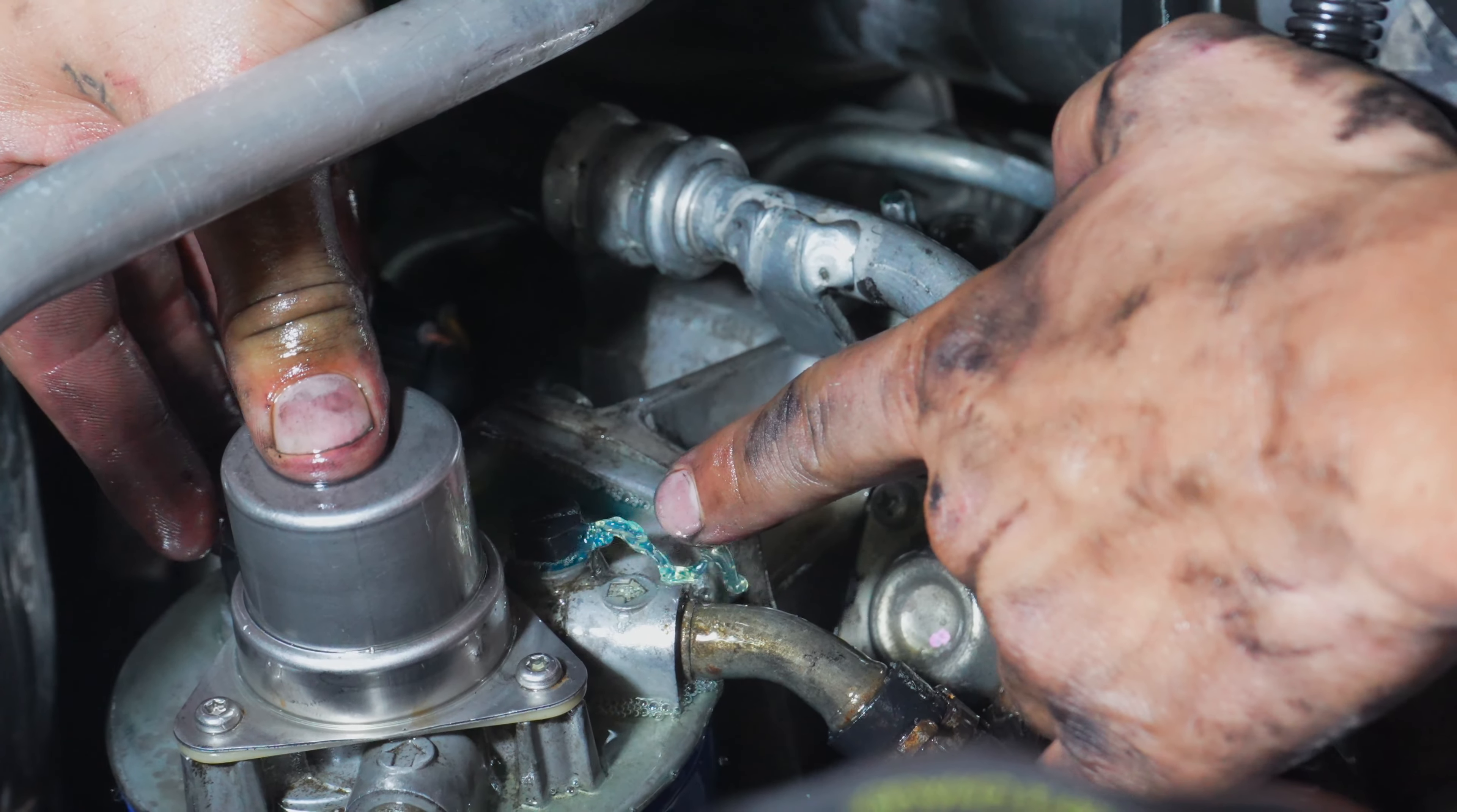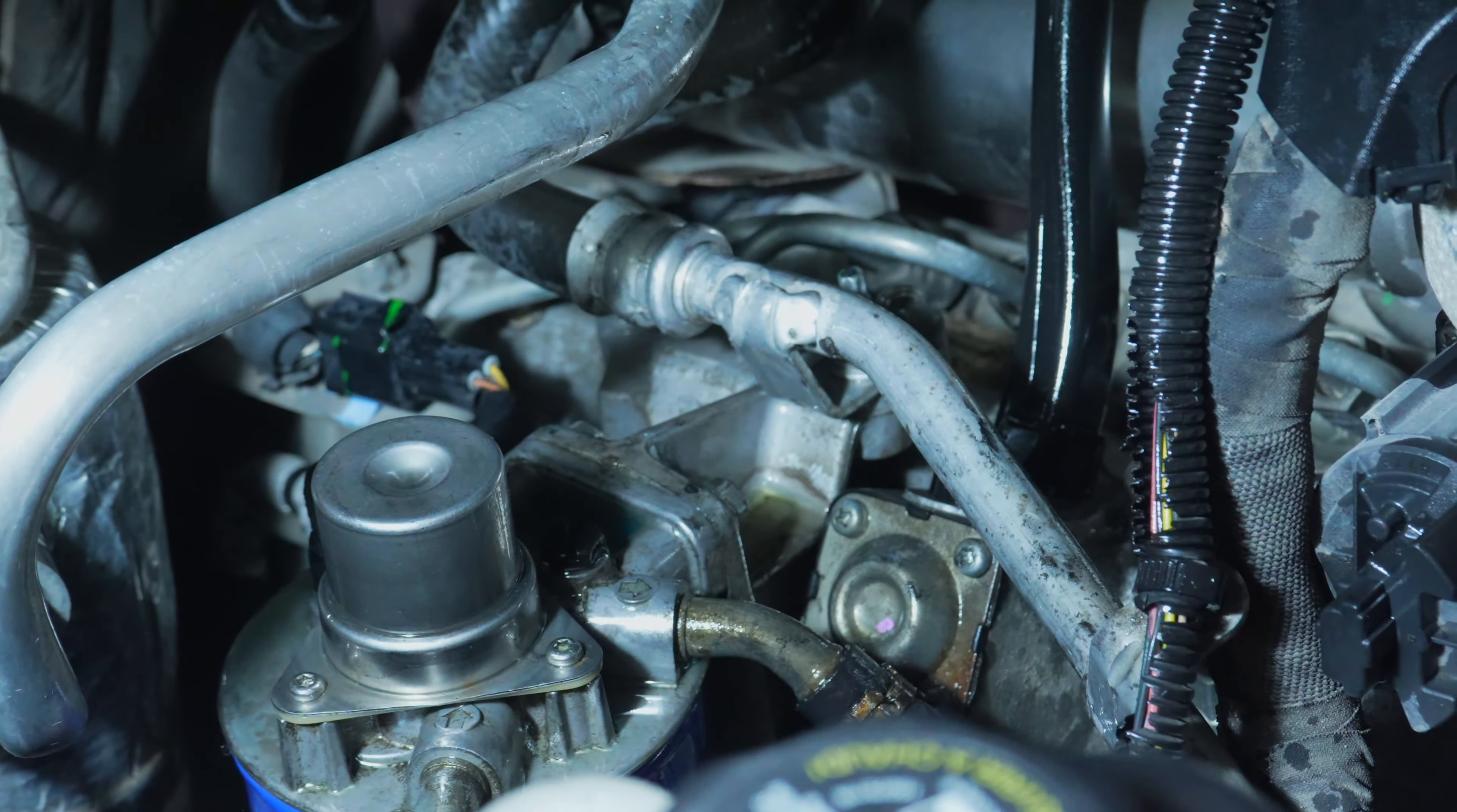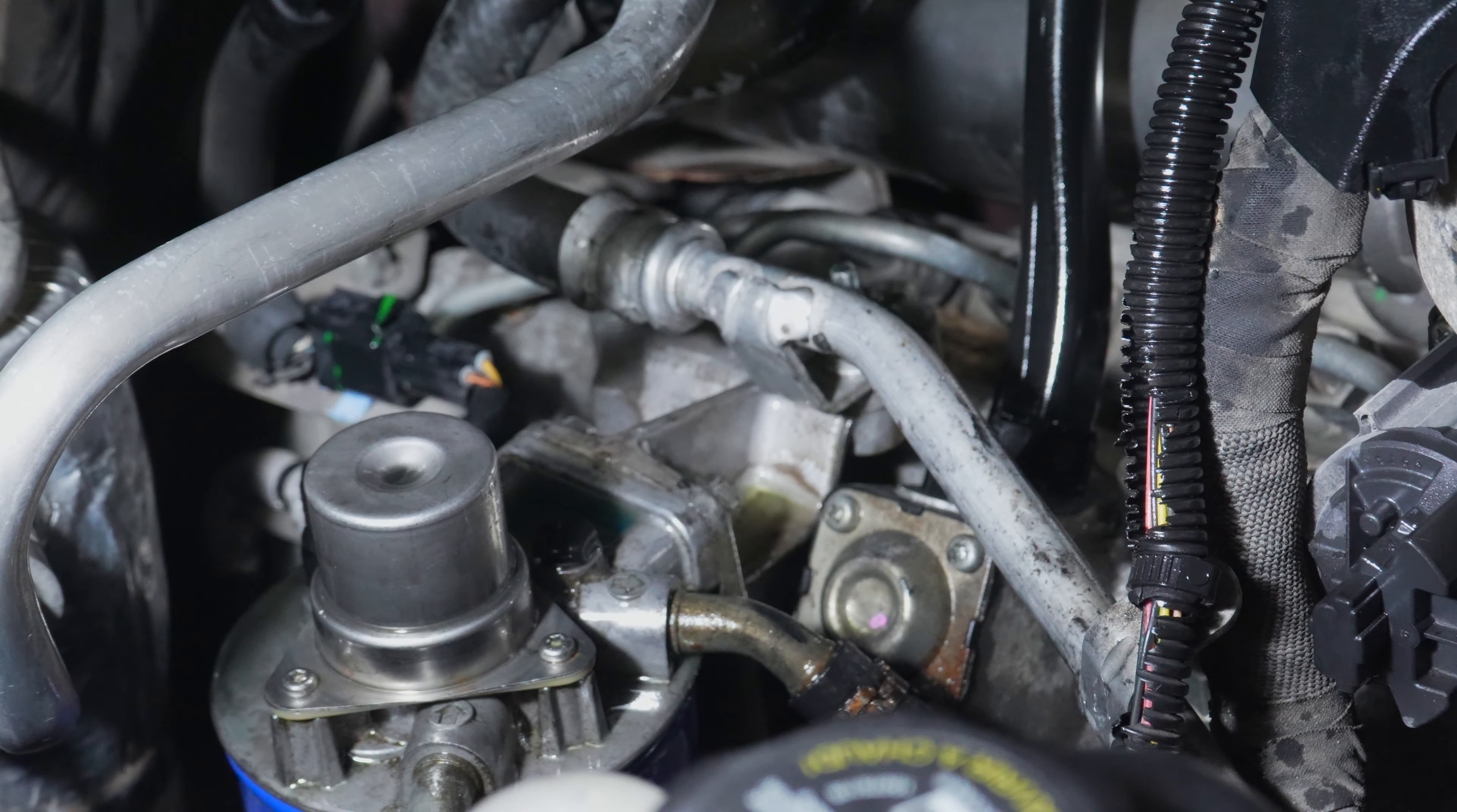All right, now we're getting straight diesel fuel out of here without all the bubbles. That means I'm going to go ahead and screw this bleeder screw back in and tighten it up. Now I'm going to continue to pump this until it's nice and firm. All right, our fuel primer is nice and firm now. This time I'm going to go ahead and reconnect our air duct and then we can go ahead and start the truck up.